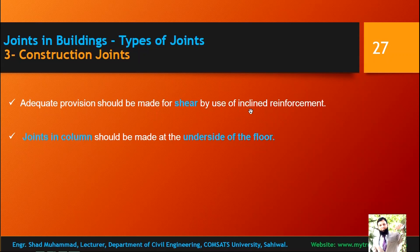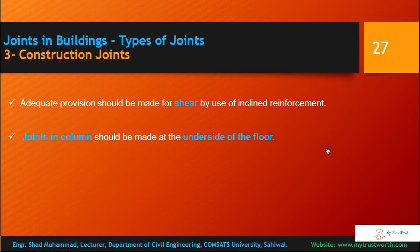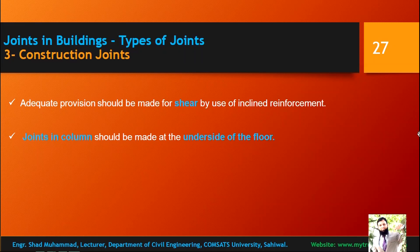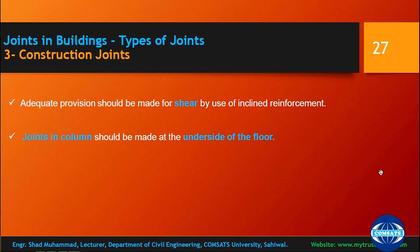Adequate provision should be made for shear — using inclined reinforcement theoretically, but practically vertical shear reinforcement (ties or stirrups) must be provided. Joints in columns should be made at the underside of the floor. If you are providing a joint in a column, it should not be at the beginning of the column or midway — it should be at the underside of the floor. You can observe this in multi-storey frame construction: after completing the column with protruding bars, centering and shuttering for the slab begins — that is the construction joint at the underside of the floor.